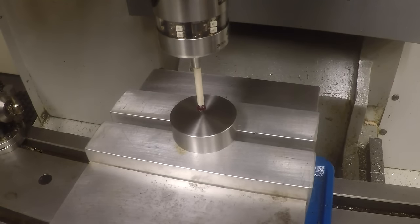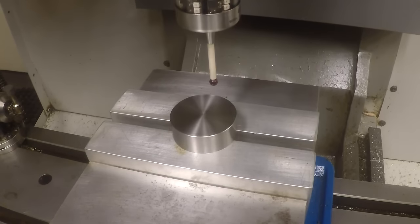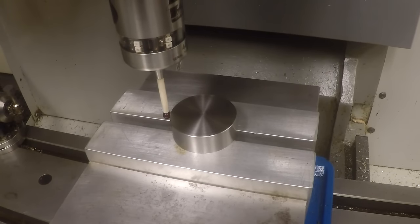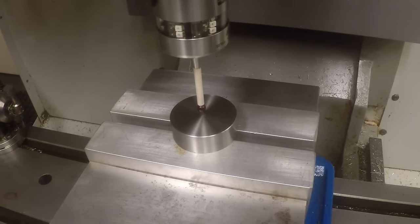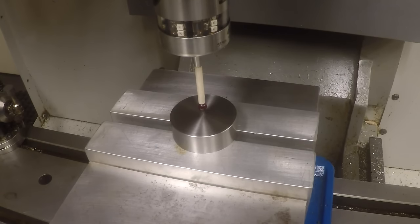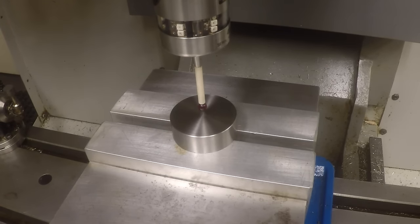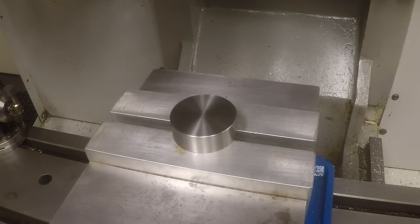I'm going to set our fixture offset. Okay, and here we go. Cycle start. This spindle probe sure makes it a lot easier to set stuff up, and that did the X and Y. And this is the Z offset coming up.